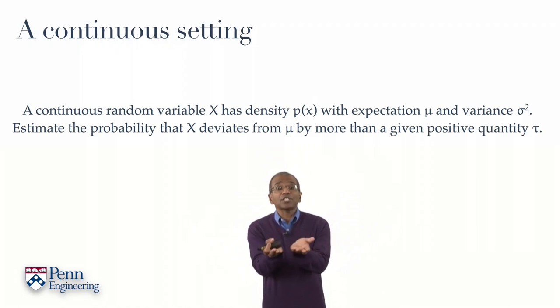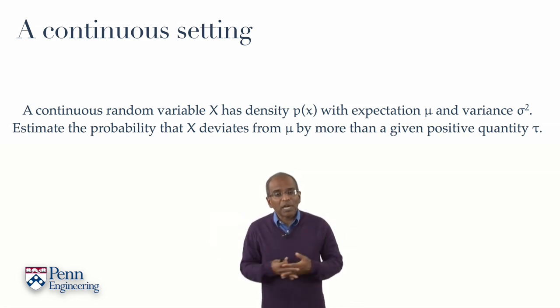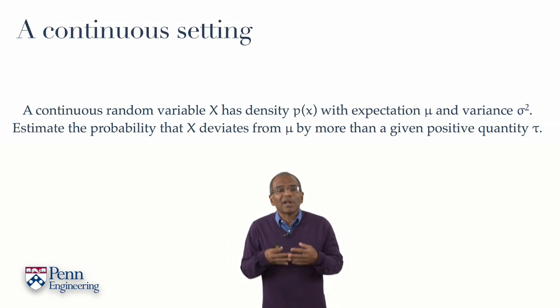The underlying sample space is the real line. We have a continuum of possible points from our chance-driven experiment. The outcome of the experiment, the sample point, is a random variable denoted uppercase X. It comes equipped with a density.